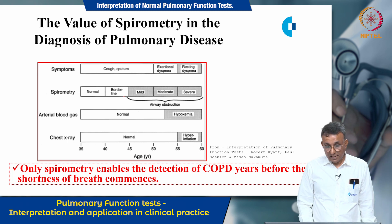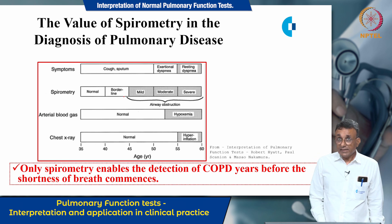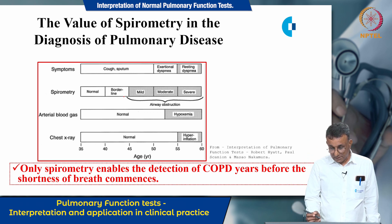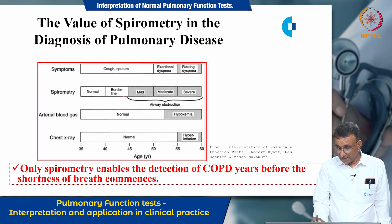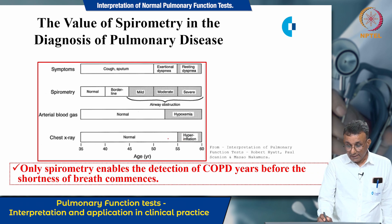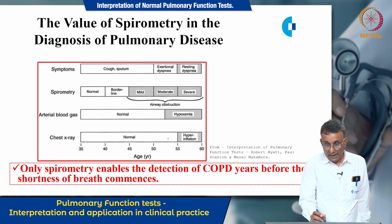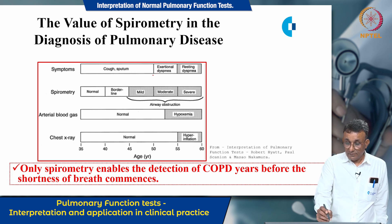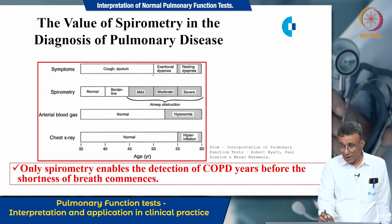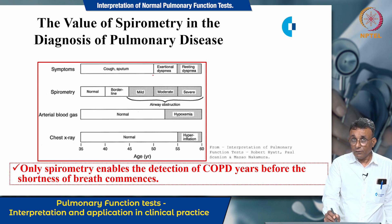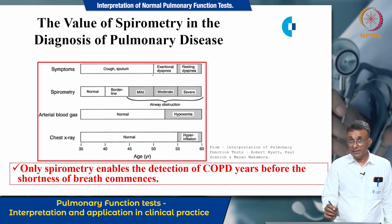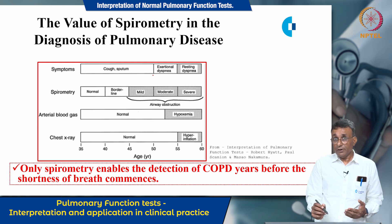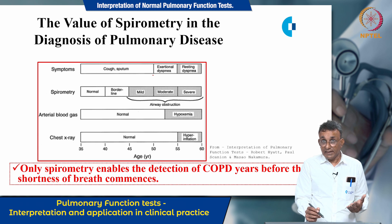This final slide shows the value of spirometry in the diagnosis of pulmonary disease, using COPD as an example. The chest X-ray shows hyperinflation only after 55 years, arterial blood gas shows hypoxemia only after about 50 years, and exertional dyspnea — which usually brings the patient to the hospital — appears only after 50 years. However, spirometric analysis can detect airway obstruction at less than 45 years — around 43 to 45 years. At this point, if necessary medical management is given, patient morbidity can be decreased. Spirometry therefore has a very important role in pulmonary disease in reducing patient morbidity and improving quality of life.